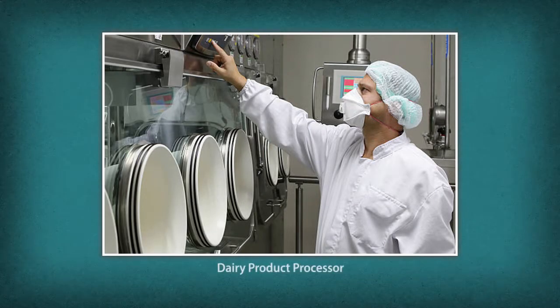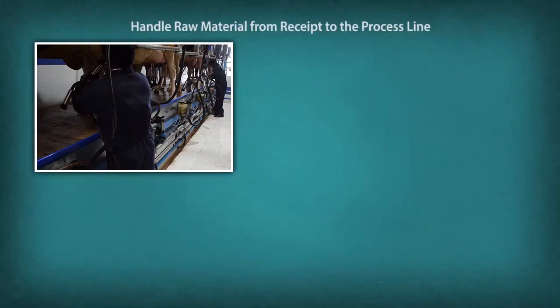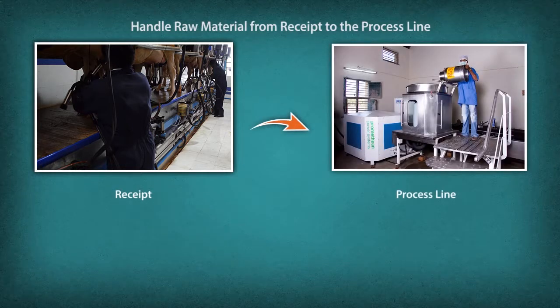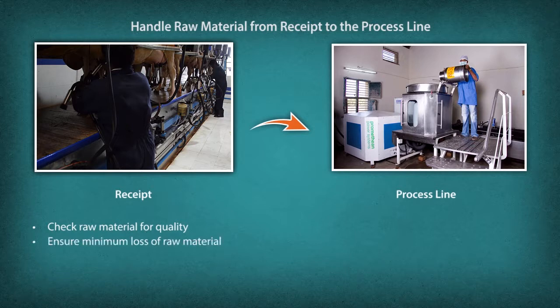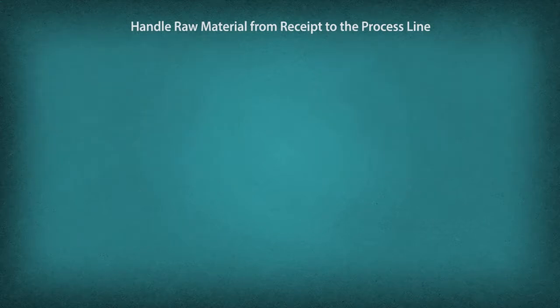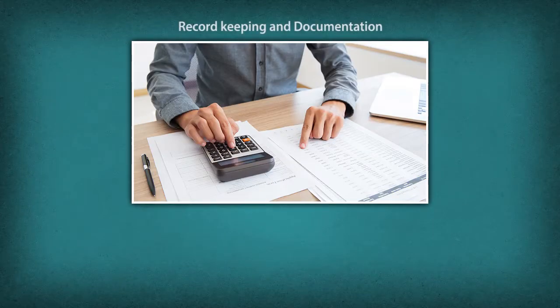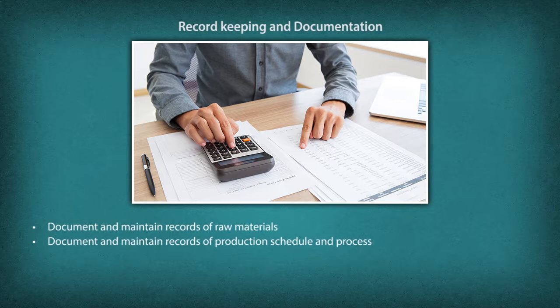Roles and responsibilities of dairy product processor. Let us now take a look at the roles and responsibilities of a dairy products processor. Handle raw material from receipt to the process line. Check the raw material for quality. Ensure minimum loss of raw material. Record keeping and documentation: document and maintain records of raw materials, production schedule and process, and finished products.